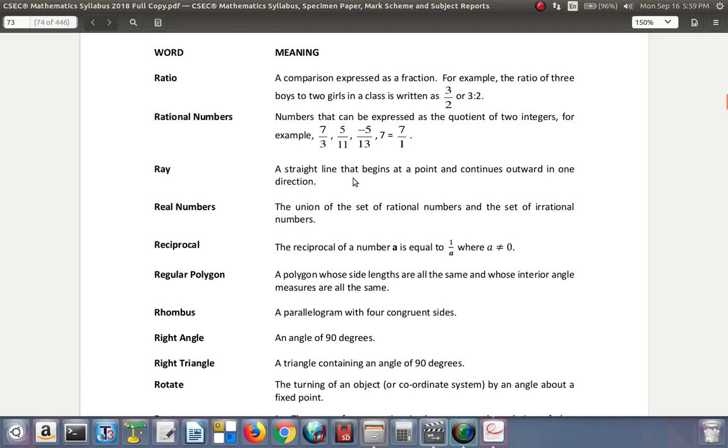Ray. A straight line that begins at a point and continues outward in one direction. Real Numbers. The union of the set of rational numbers and the set of irrational numbers. Which means all numbers except those imaginary numbers. They are both rational and irrational numbers. Reciprocal. The reciprocal of a number a is equal to 1 over a where a is not equal to 0.